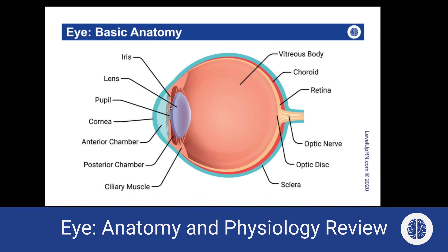A couple of things to keep in mind as you look at this illustration. Later on in this video series, we are going to talk about cataracts, which causes proteins to clump up on the lens, creating a lens opacity. We're also going to be talking about glaucoma, which occurs when there is an overproduction of aqueous humor produced by the ciliary body, or it can be caused by obstruction of outflow of that aqueous humor. And then we're also going to talk about retinal detachment, which is caused by a buildup of vitreous humor that collects behind the retina and causes the retina to detach.